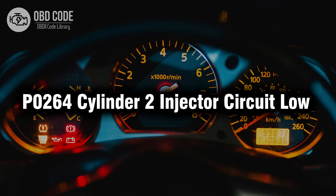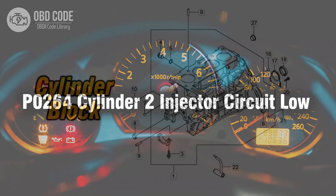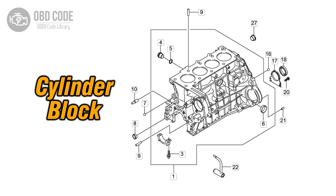Welcome. In this video we will talk about code P0264, its symptoms, causes and possible solutions. The P0264 trouble code is associated with Cylinder 2 injector circuit low, indicating a low voltage condition in the circuit for the fuel injector in Cylinder 2. This code is commonly found in vehicles with multiport fuel injection systems.